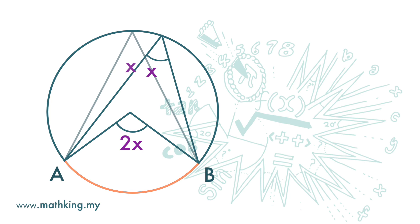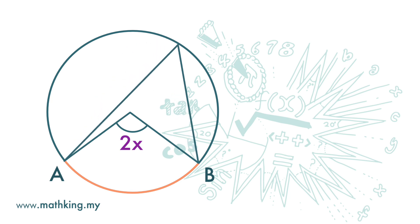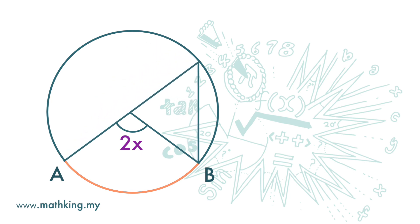Now we move the point a bit more, and we move the angle at the circle to get this new shape. Note that the angle at the circumference is x and the angle at the center is still 2x. If we continue to move the point, the rule continues to hold.